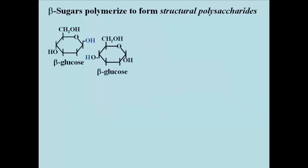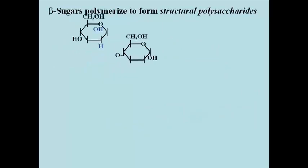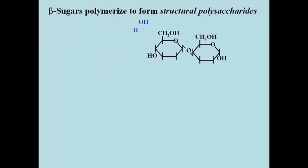If beta glucose enantiomers are polymerized in condensation reactions like the one shown here, the beta glycoside linkages that form create a rigid, inflexible polysaccharide like cellulose.